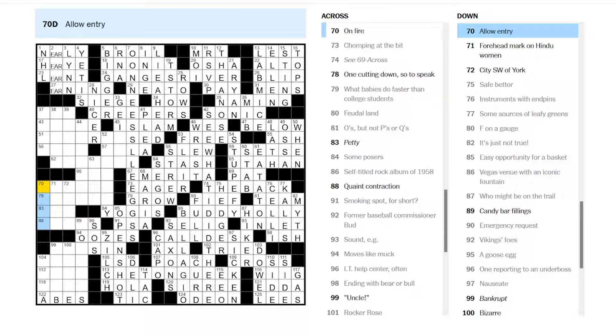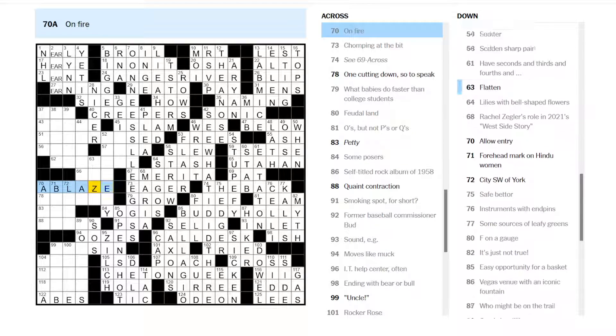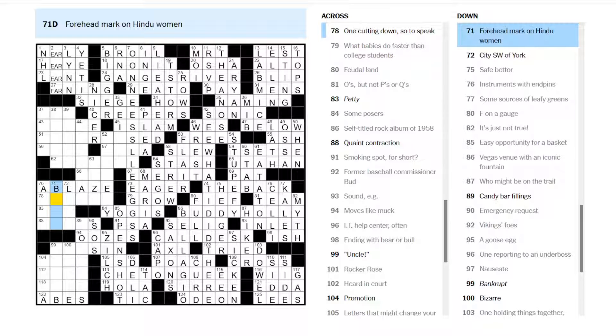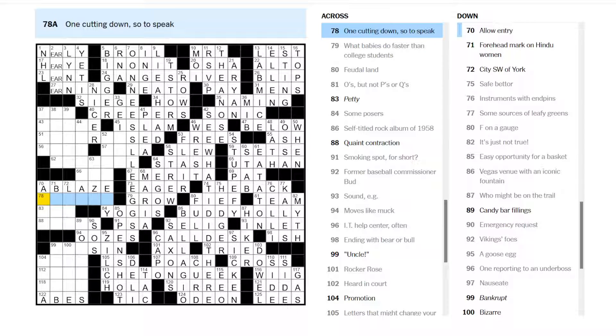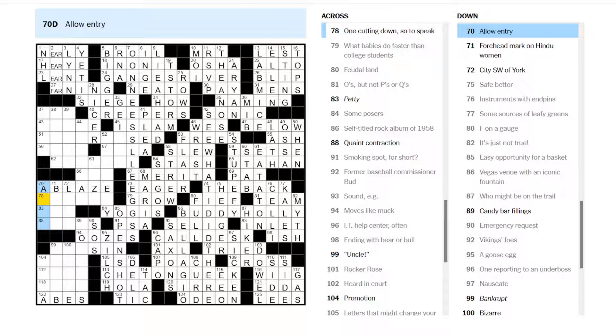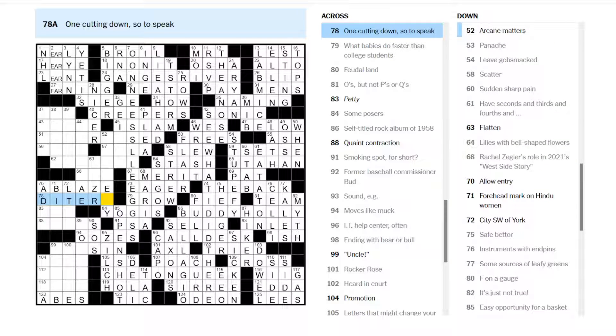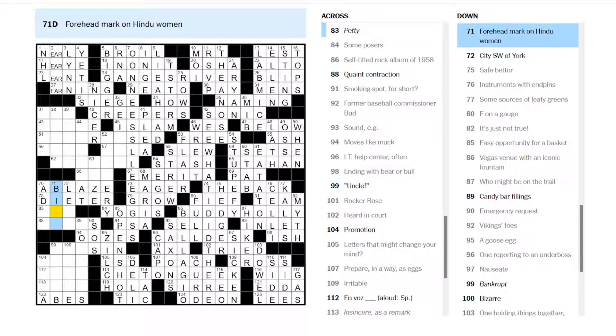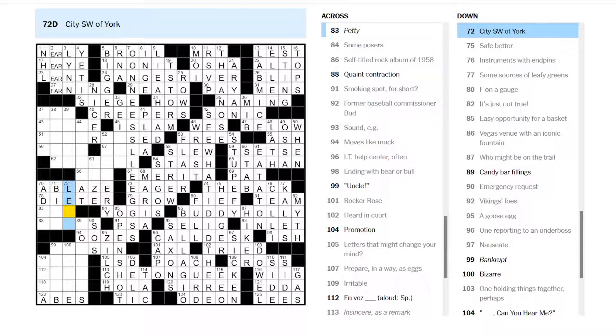Maybe it's not nougat. Quaint contraction. Allow entry is to let in to allow entry. I'm on fire. I'm ablaze, maybe. City southwest of York. No clue. Forehead mark on Hindu women. I feel it's called a bindi. I guess I could be wrong. I'm wrong about that. One cutting down, so to speak. One cutting down. Maybe a dieter.